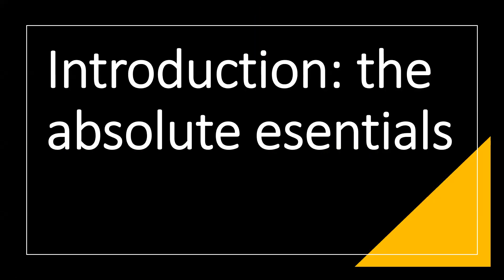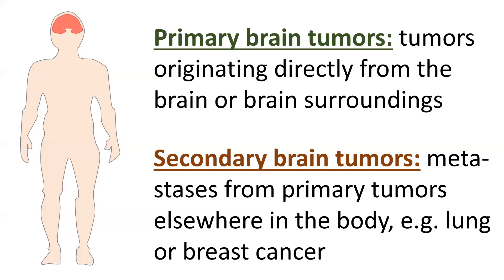Let's start with a very short introduction — the absolute basics of brain tumours. You can divide them into two broad categories: primary brain tumours, which originate directly from the brain or surrounding structures such as the meninges or cranial nerves, and secondary brain tumours, which have metastasised from primary tumours elsewhere in the body — for instance, a primary lung or breast tumour that has metastasised to the brain.